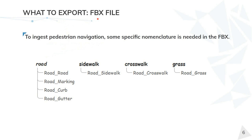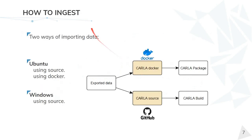For the FBX file, it's important to use a specific nomenclature. This is important for the pedestrian navigation to identify which areas they can walk or cannot walk. We have four main areas. All geometry for the road needs to start with one of these: Road_Road, Road_Marking, Road_Curve, or Road_Water. For the sidewalk, we need to use Road_Sidewalk. For the crosswalk, the same with its nomenclature. And the grass, which is a secondary sidewalk, also needs to start with Road_Grass.